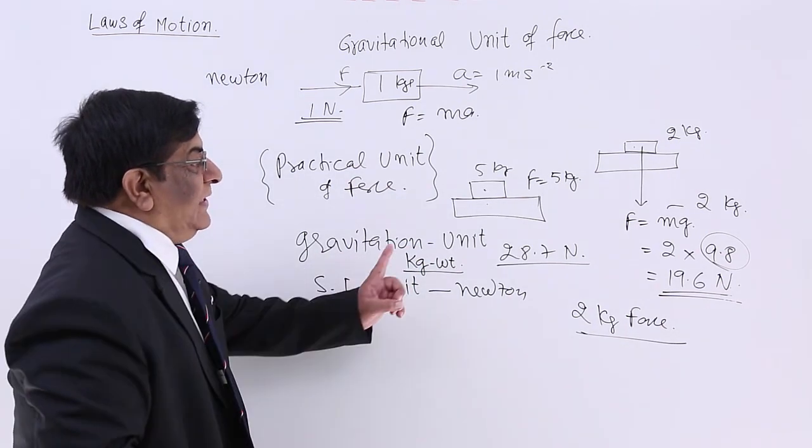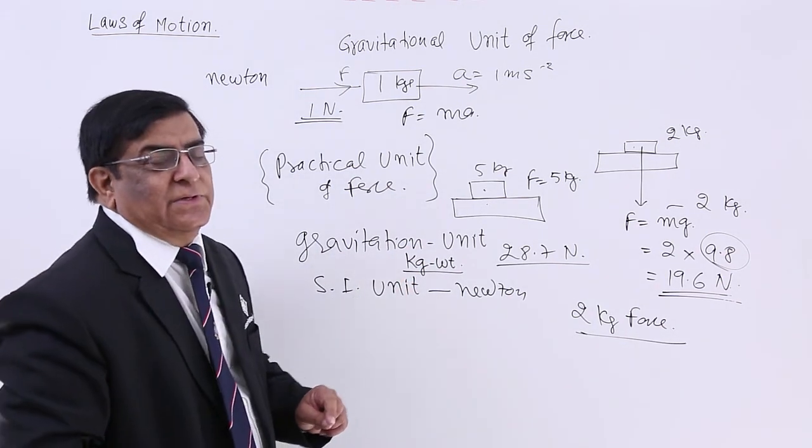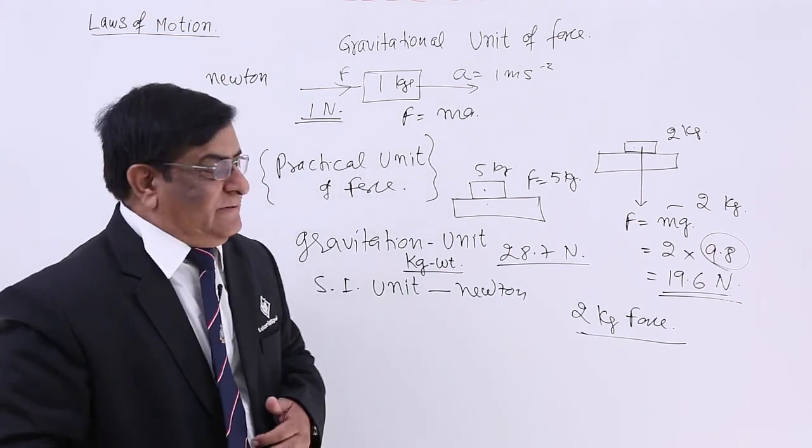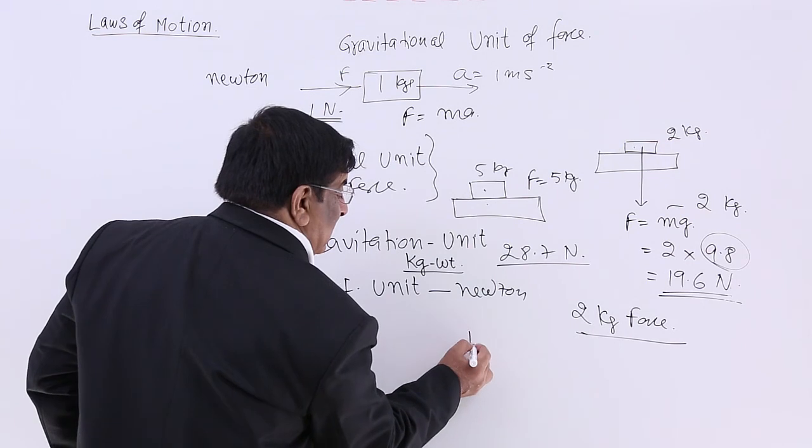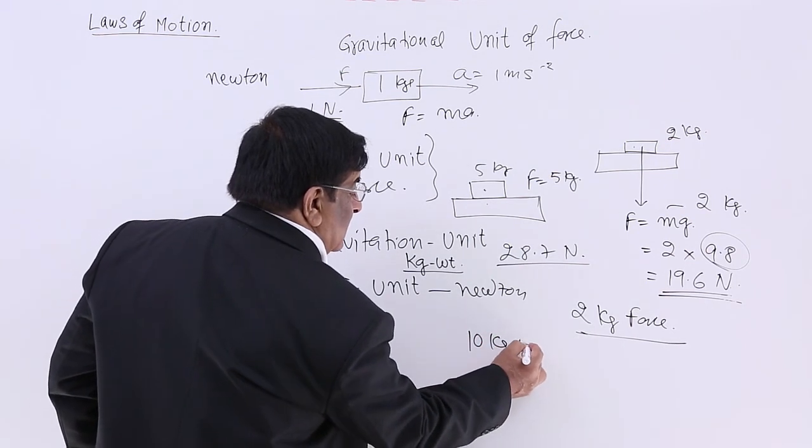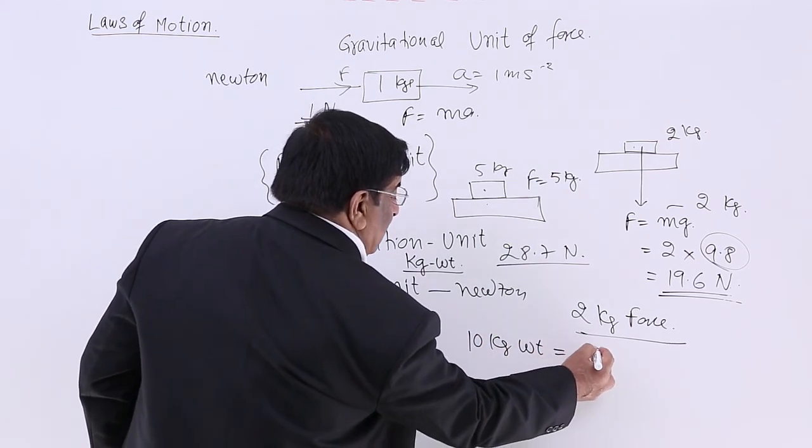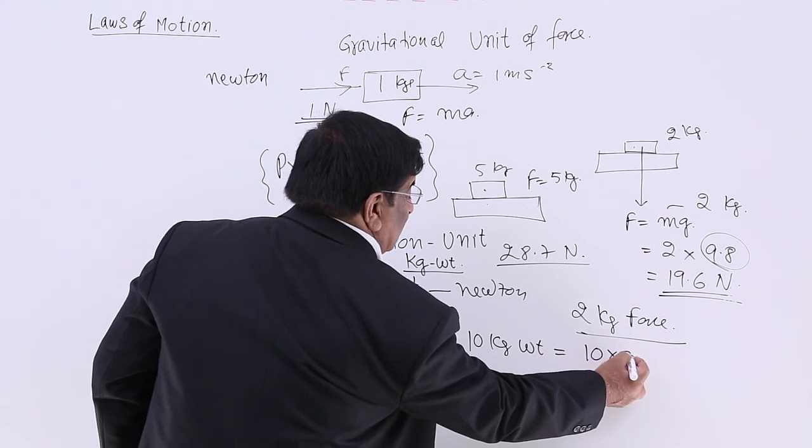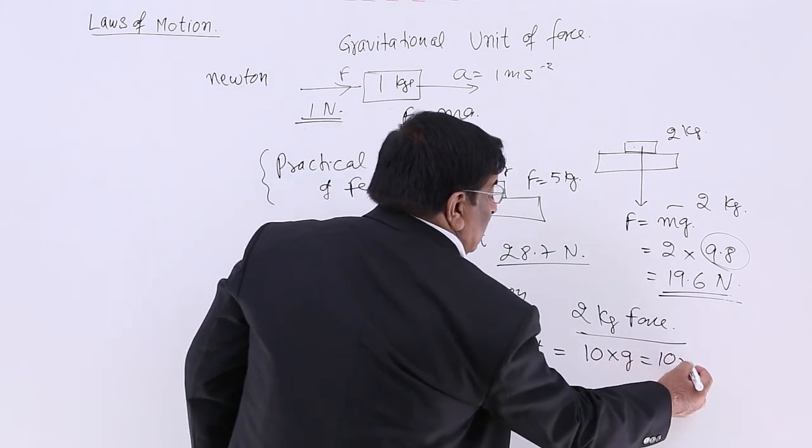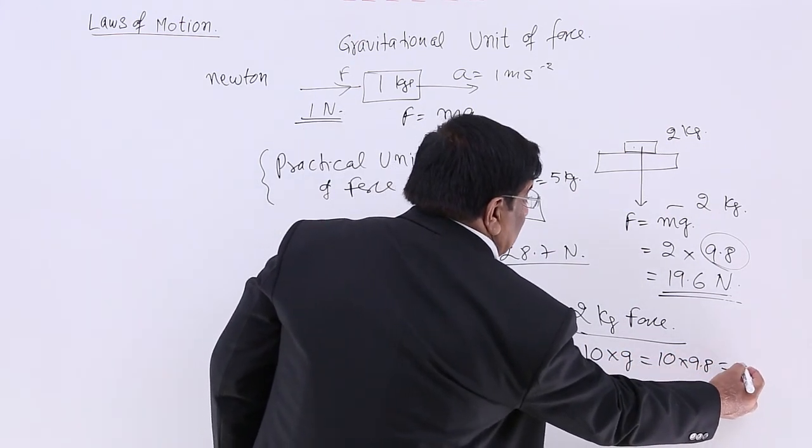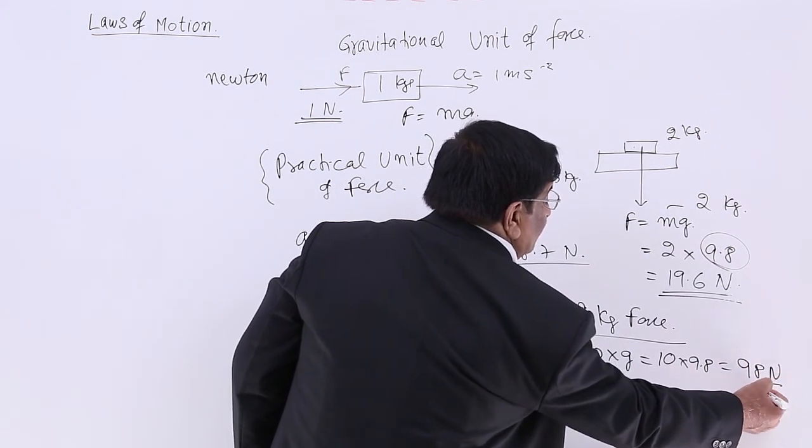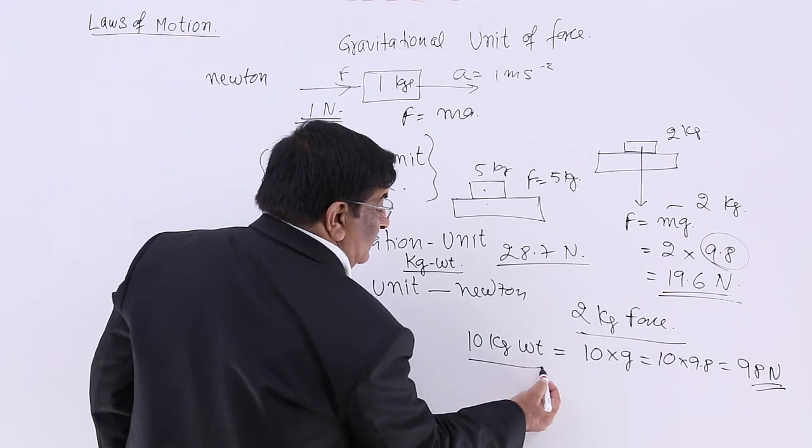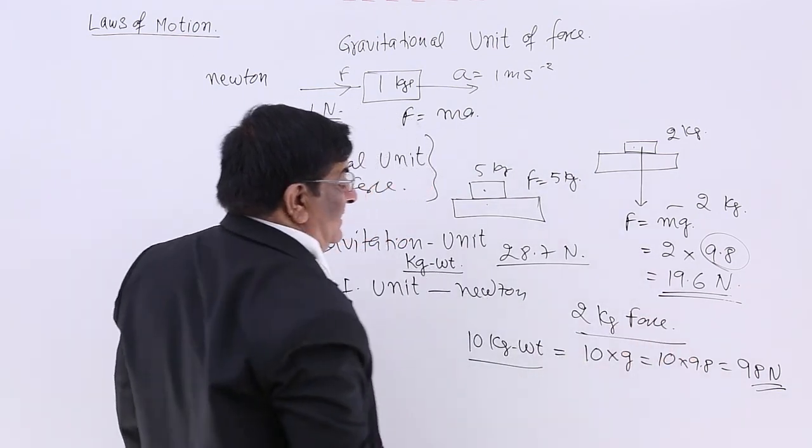So now it is clear. If I tell you the force is 10 kg weight, then you will understand how much mass is placed: 10 kg. 10 kg weight is equal to 10 multiplied by g, that is 10 multiplied by 9.8, that is 98 Newton. 10 kg weight is equal to 98 Newton.